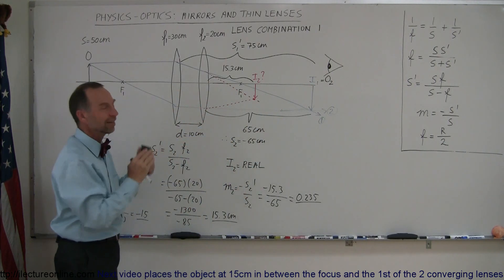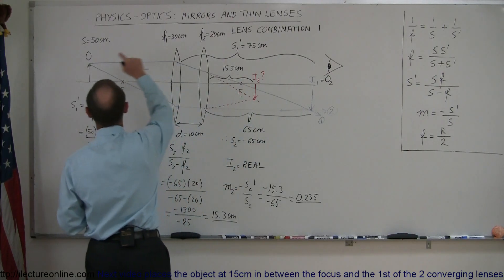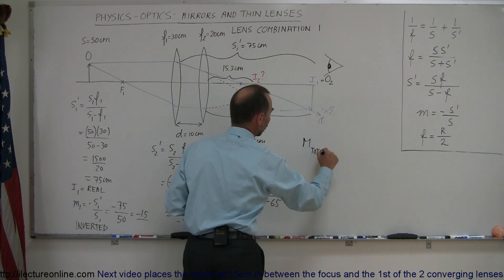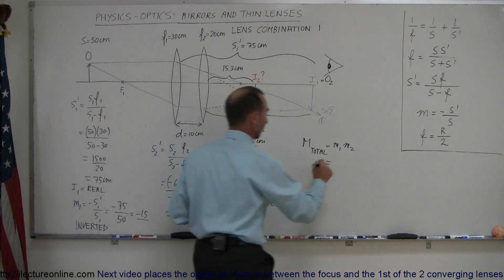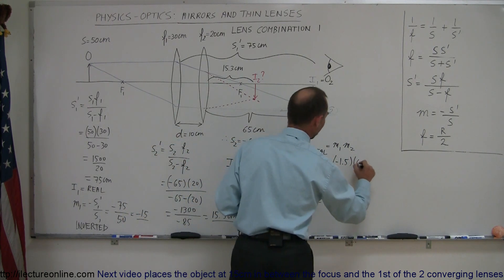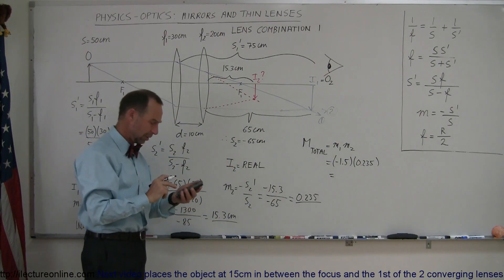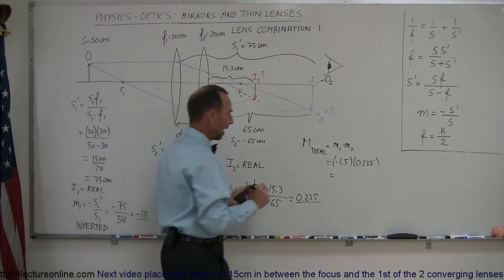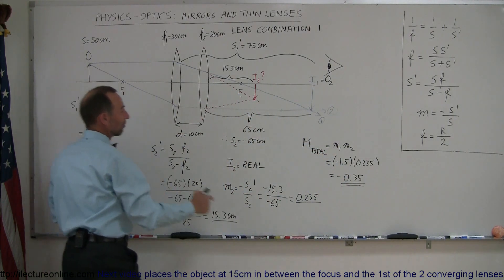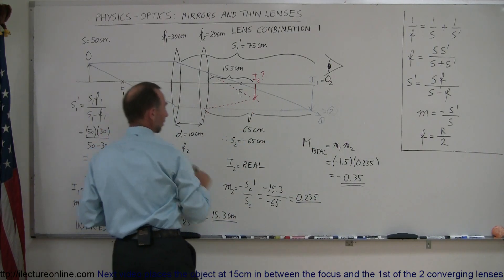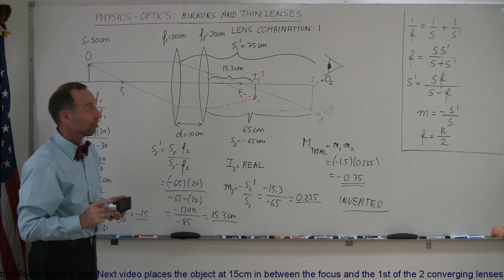The total magnification of the second image relative to the original object is found by multiplying M1 times M2. M1 was minus 1.5 and M2 was positive 0.235. Multiplying those together: minus 1.5 times 0.235 equals minus 0.35. That is the magnification of the second image relative to the original object. The negative means the final image is inverted relative to the original object. And that's how you do a double-lens problem.